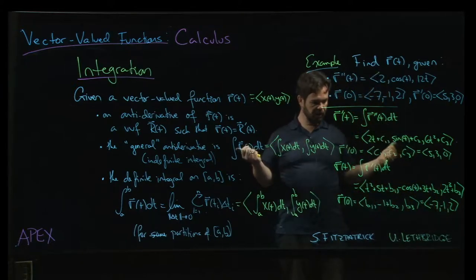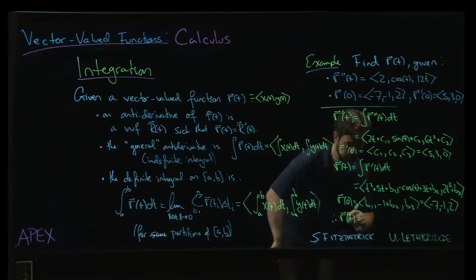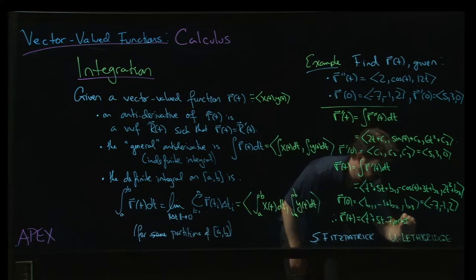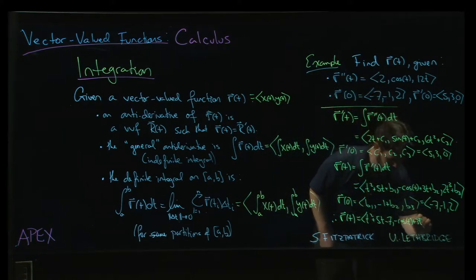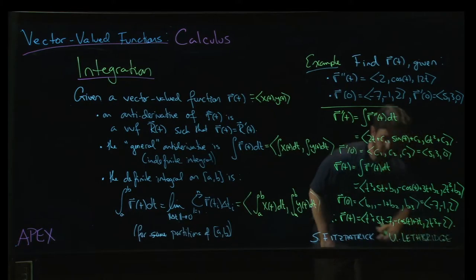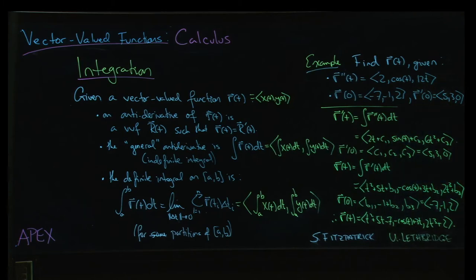So finally, we can plug those values in and we can say what our vector-valued function is going to be. It's going to be t squared plus 5t minus 7. Then it's going to be minus cosine t plus 3t. b2 is 0. And then we're going to have 2t cubed plus b3, which was 2. Okay? And we've solved our problem.